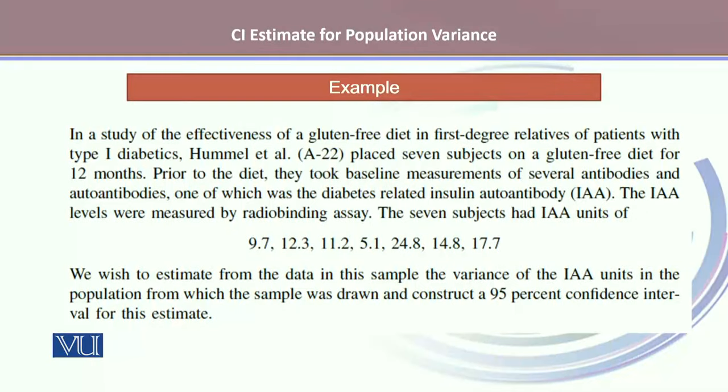Let's take an example. In a study of the effectiveness of a gluten-free diet in first-degree relatives of patients with type 1 diabetes, Hummel et al. placed seven subjects on a gluten-free diet for 12 months. Prior to the diet, they took baseline measurements of several antibodies and autoantibodies, one of which was the diabetes-related insulin autoantibody IAA.